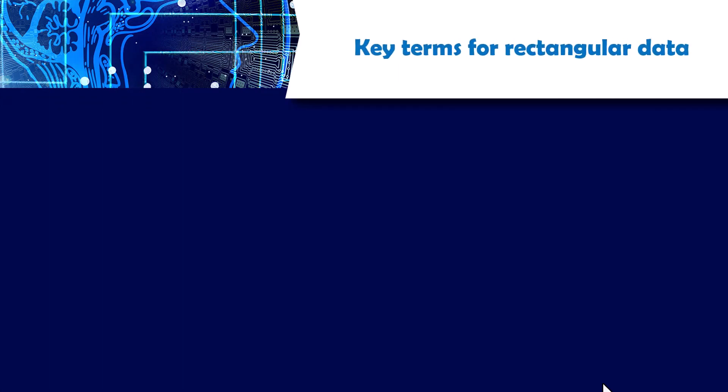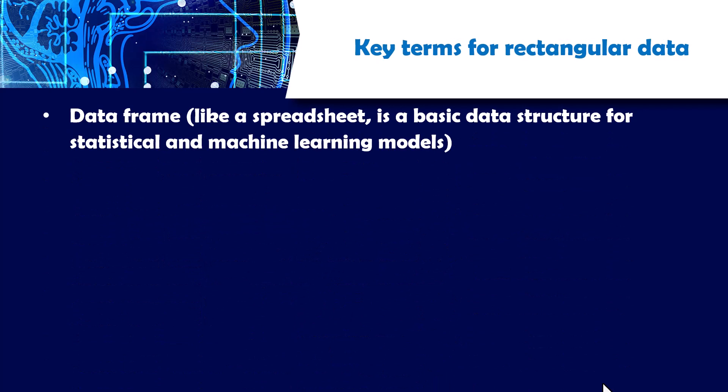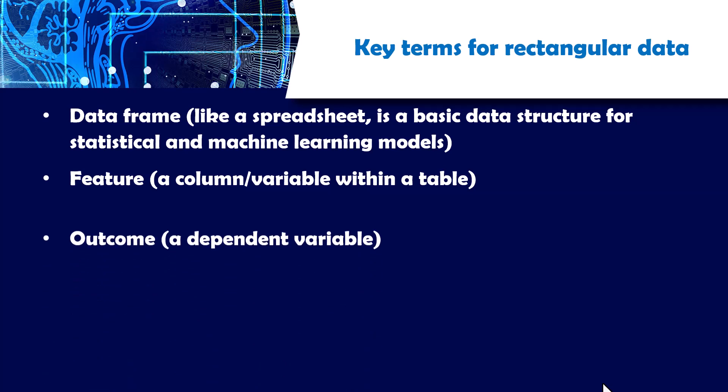There are key terms for rectangular data. First of all, we have a data frame, which is just like a spreadsheet, like the way you would see a spreadsheet in a workbook for Excel. This is a basic structure for statistical and machine learning models. Then there is a feature, which is commonly considered as a column or a variable within a table. Then we have an outcome, which is basically a dependent variable in case you want to come up with a predictive model to predict for something.